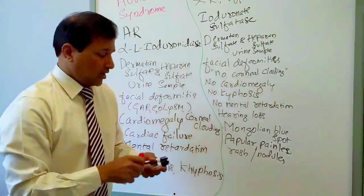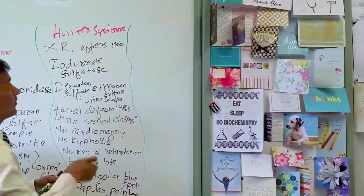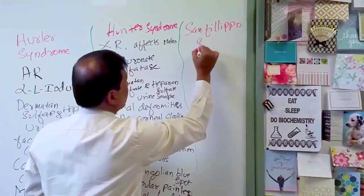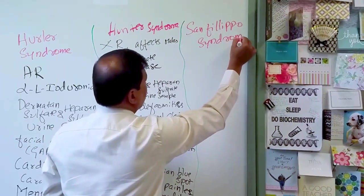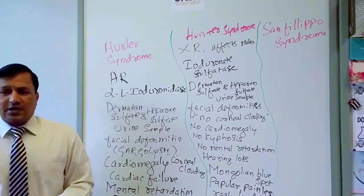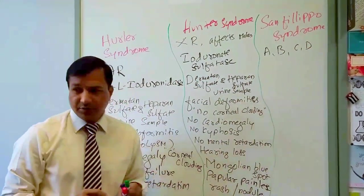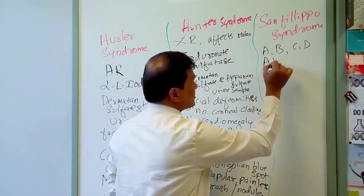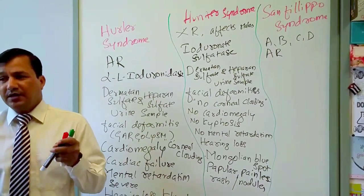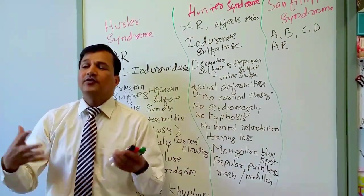Now let's move on to Sanfilippo syndrome, our third disorder. There are four types of Sanfilippo syndrome — type A, B, C, and D — each caused by a different enzyme deficiency.